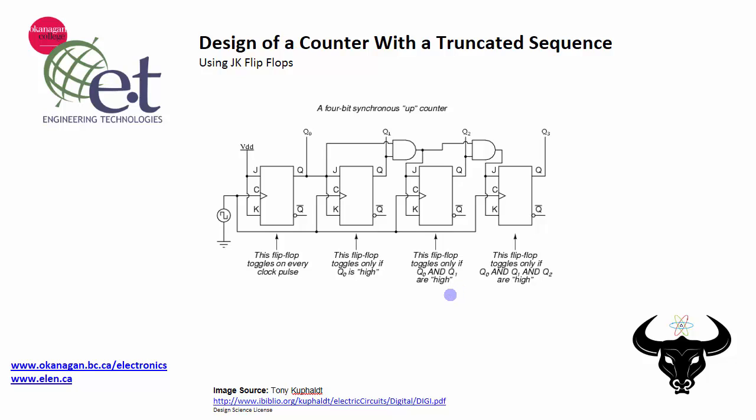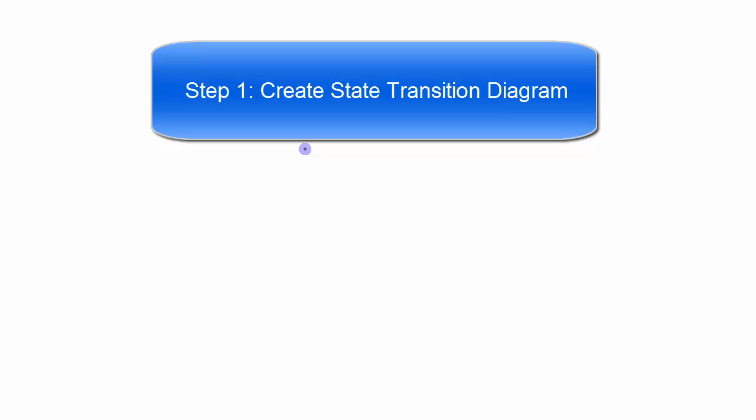What I'm going to show you is a more general approach to the design of a counter, and use that generalized approach to design a counter that counts from 0 to 9 and then repeats itself over and over again. The first step in this approach is to come up with a state transition diagram, which is simply a diagram showing all of the different states — in this case all of the different counts — that we are going to go through and how those counts move from one state to another.